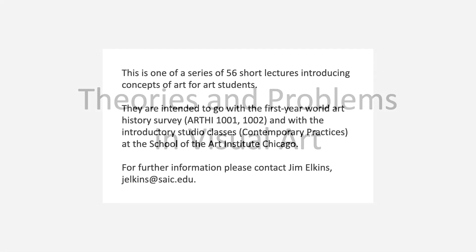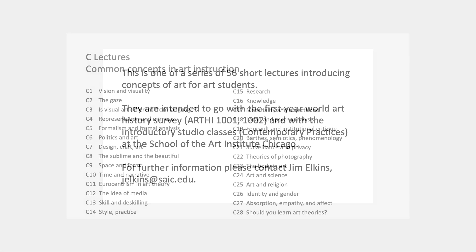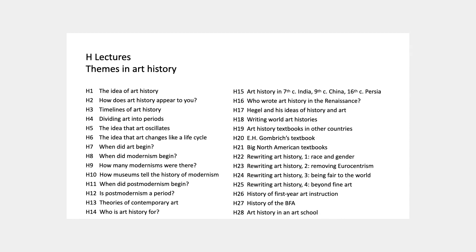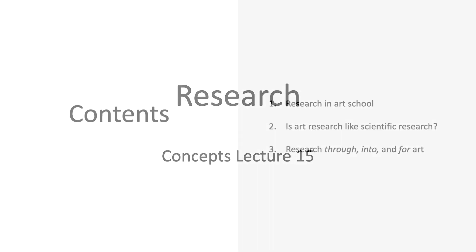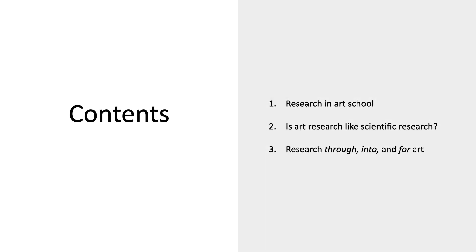Welcome to Theories and Problems in Visual Art. This is Concepts Lecture 15 on Research. I'm going to talk a bit about research in an art school, in art schools in general, and then explore the question about artistic research and scientific research and whether or not they're related. The last part of this lecture is about some alternative ways of trying to understand what it means to say that you could do research in art.